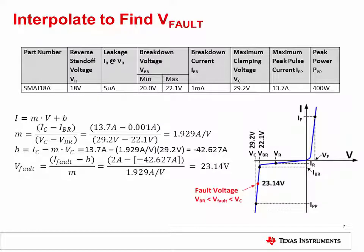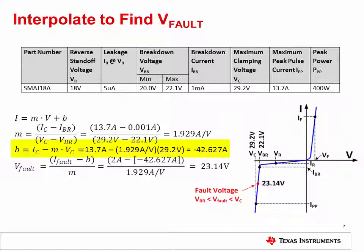Since VC and VBR are specified, it is possible to interpolate between the two points to determine the fault voltage at a specific fault current — 2 amps in this example. Here we show how to use linear interpolation to find the fault voltage across the example TVS diode for 2 amps of fault current. The equation is the standard straight line in the form I equals M times V plus B. Solving for the slope M, we divide the change in current over the change in voltage for the breakdown and clamp points, using the maximum values so that the solution is conservative. After solving for the slope, we rearrange the equation and solve for the y-axis intercept B. Finally, we substitute this information back into the equation and solve for the fault voltage at 2 amps. In this case, the fault voltage is 23.14 volts.